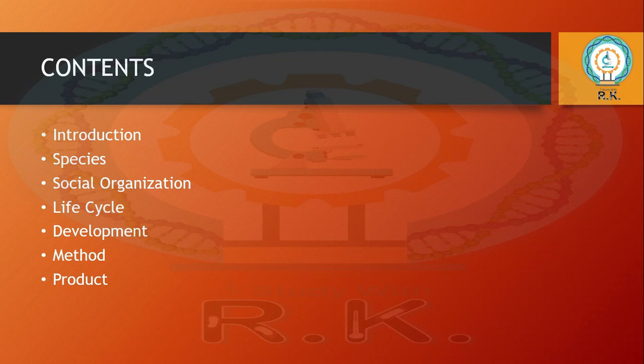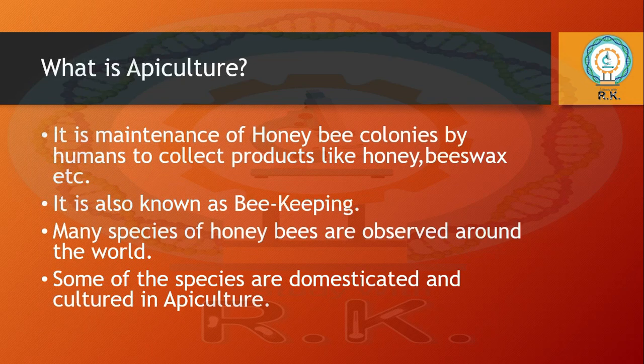The contents of today's topic will include: different species used for apiculture or beekeeping, social organization of bees, life cycle of bee development, methods of apiculture, and at last, the products which we will get after the complete process.